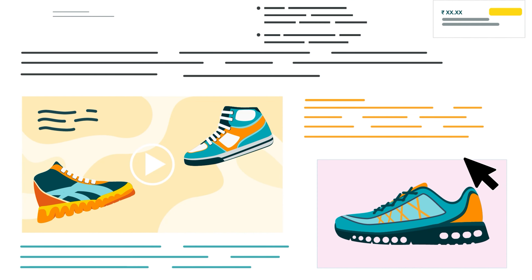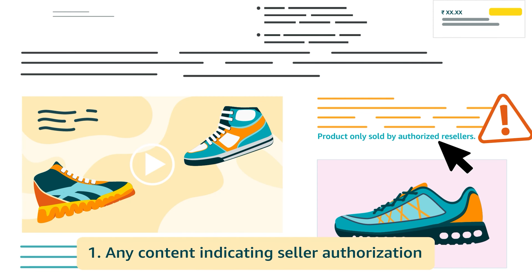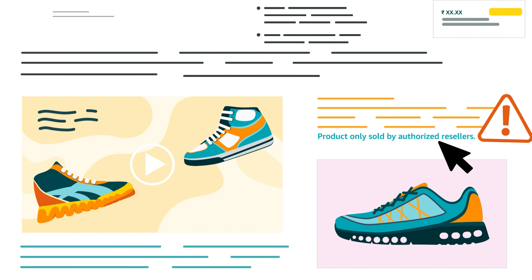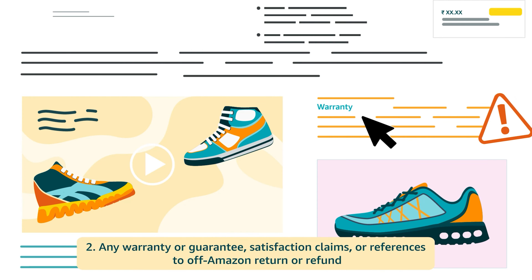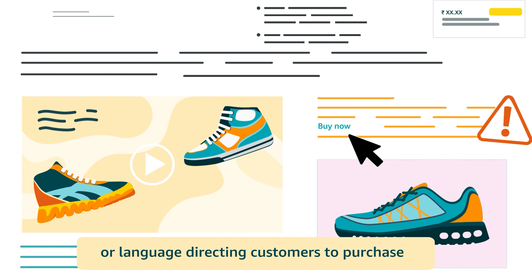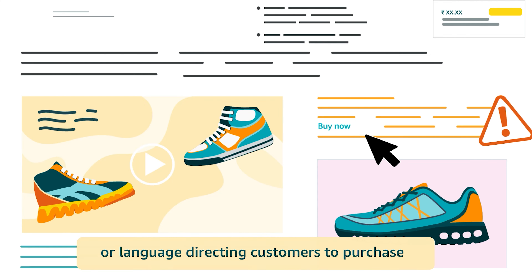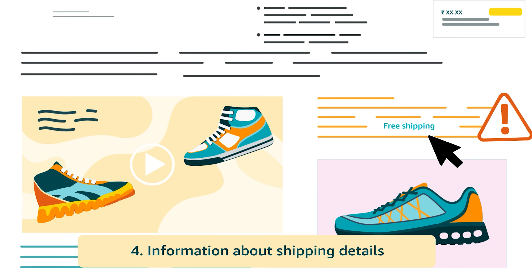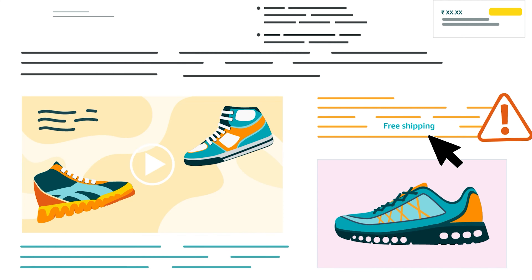Content that is restricted or prohibited from inclusion in the product description page on Amazon.in includes: any content indicating seller authorization, such as 'product only sold by authorized resellers'; any warranty or guarantee, satisfaction claims, or references to off-Amazon return or refund; and pricing or promotion references such as affordable, cheap, bonus, free, or language directing customers to purchase, such as 'buy now,' 'add to cart,' 'get yours now,' or 'shop with us.'